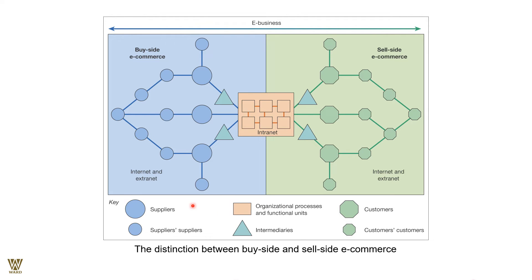On the buy side, you have your suppliers and sub-suppliers — vendors at multiple levels feeding into each other, connected via the internet as the transaction medium, with an intermediary collating everything. Similar patterns exist on the sell side, using the internet and extranet. The distinction between buy side and sell side follows similar procedures, with the internet facilitating the entire process.